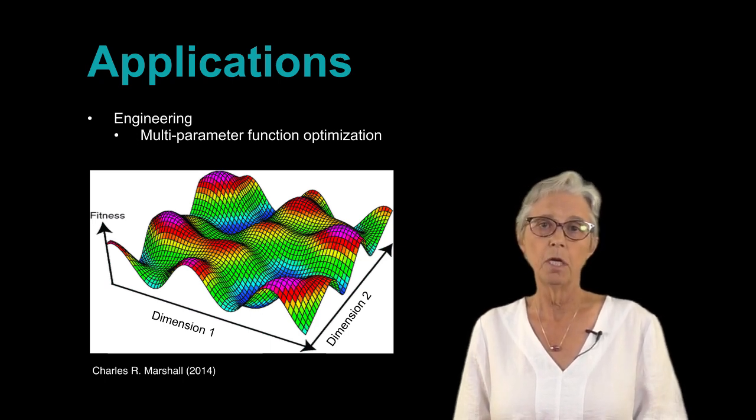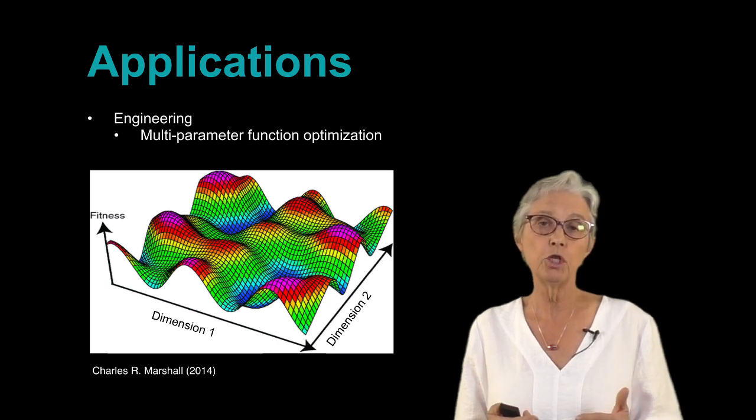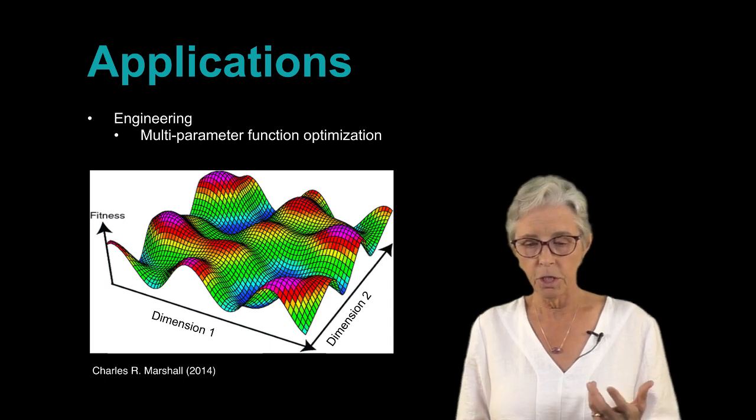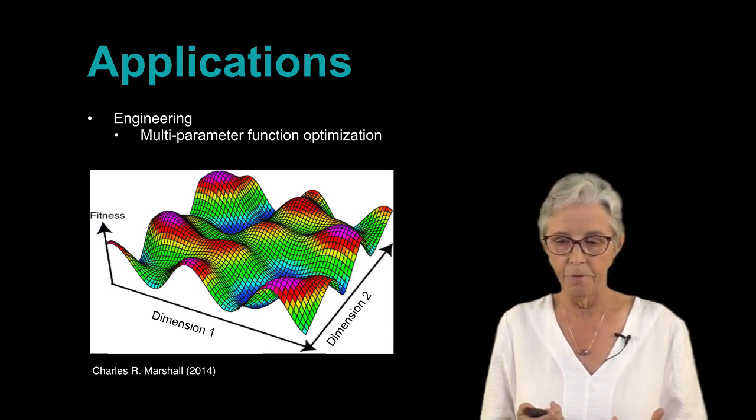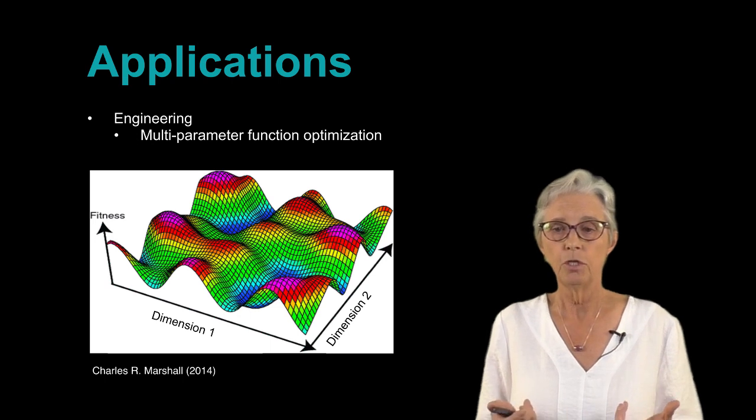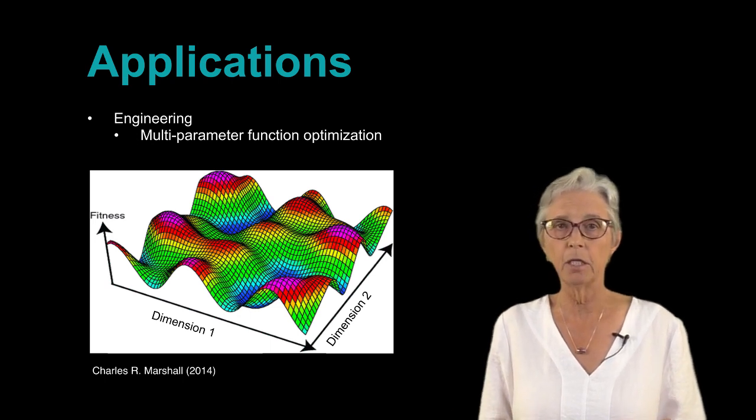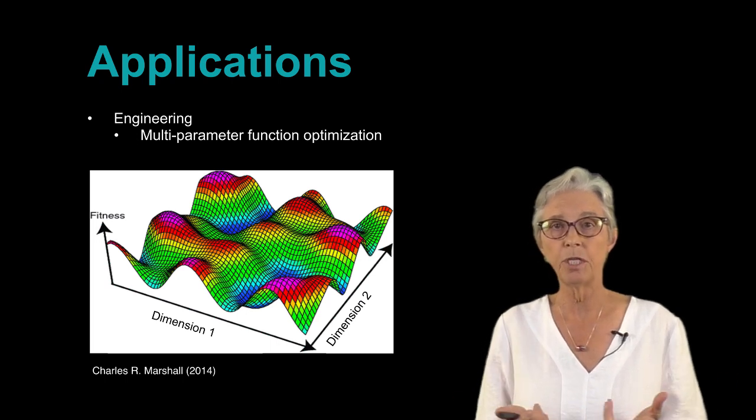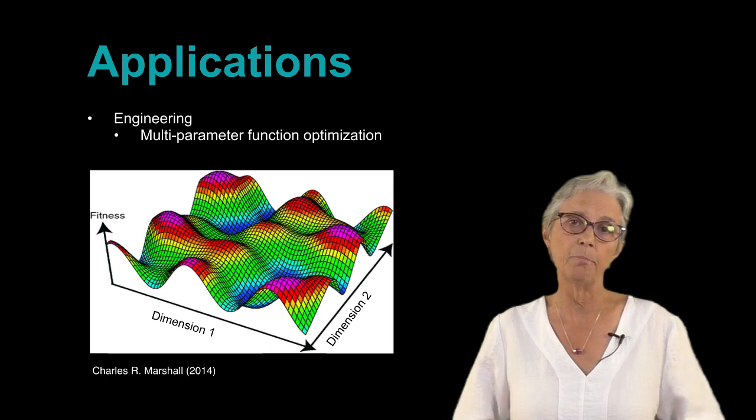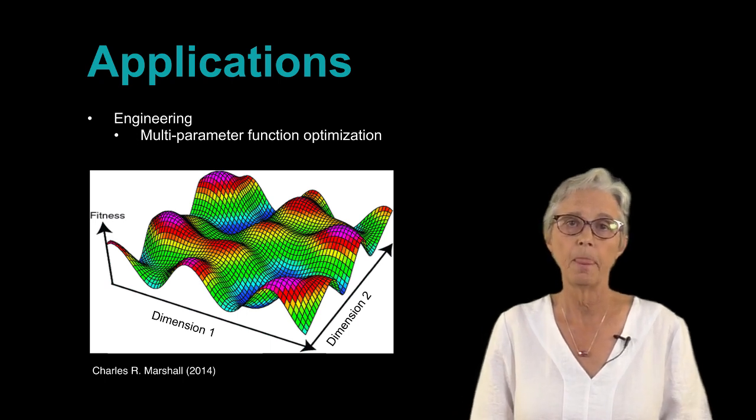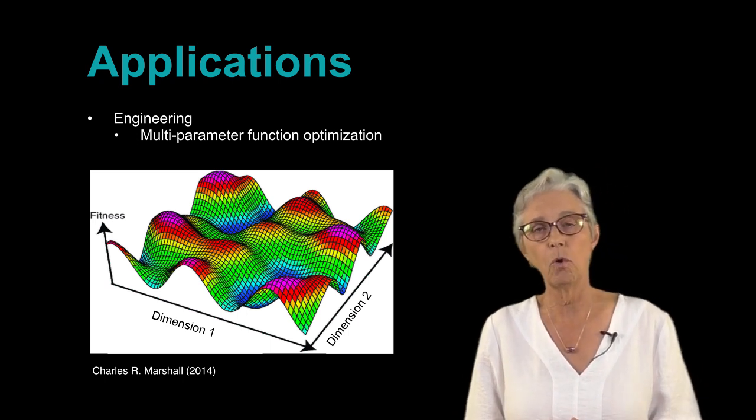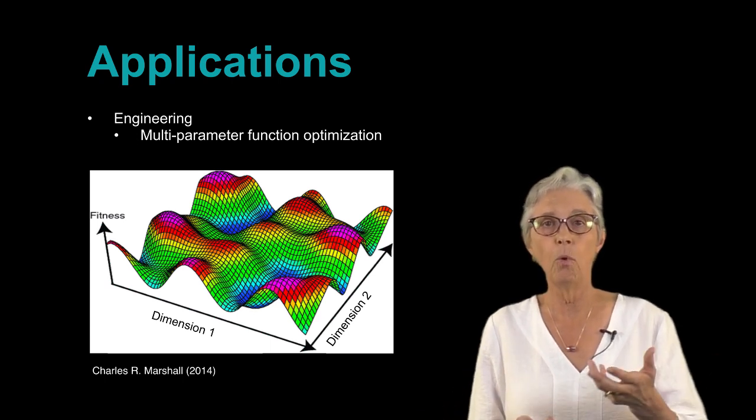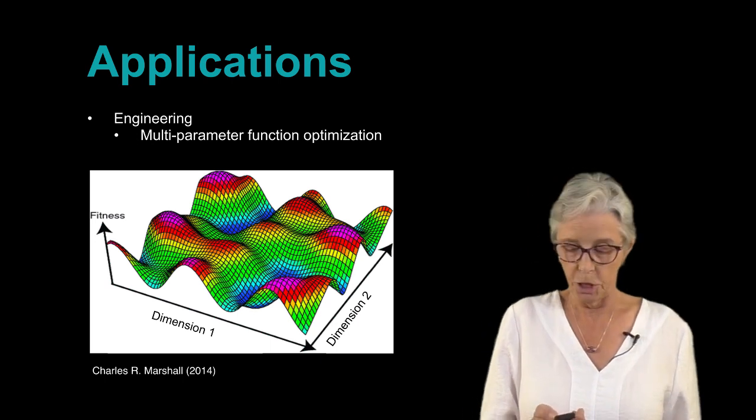Of these, by far the most common is what's known as multi-parameter function optimization. That's shown in the figure where just for a two-dimensional function—that is a function in two variables—if the function is complex, a lot of times we don't have analytical methods to find mathematically what the maximum value of the function is. When that happens, we have to resort to sampling, and we can think of the genetic algorithm as a kind of biased sampling algorithm. The goal of course would be to find, in this multi-peak surface, find points that are on the highest peak up at the top.